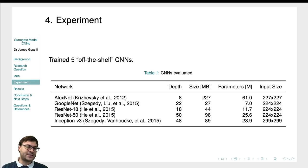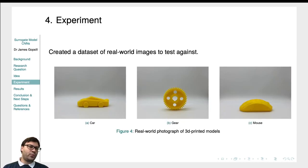We then took five off-the-shelf CNNs: AlexNet, GoogleNet, ResNet and Inception models to see if the existing state-of-the-art models would be suitable for this application.